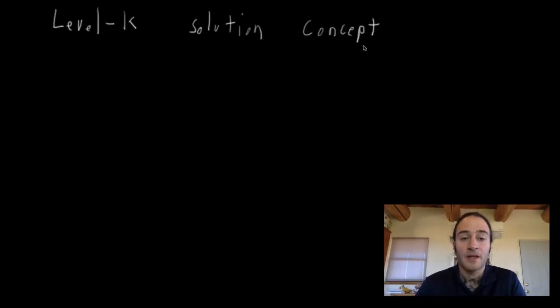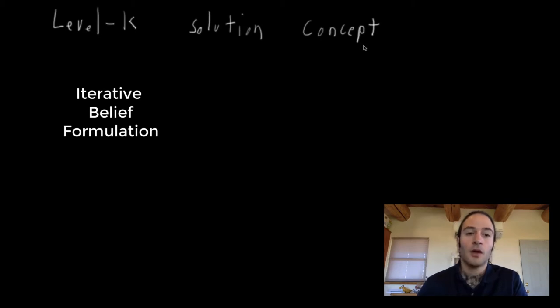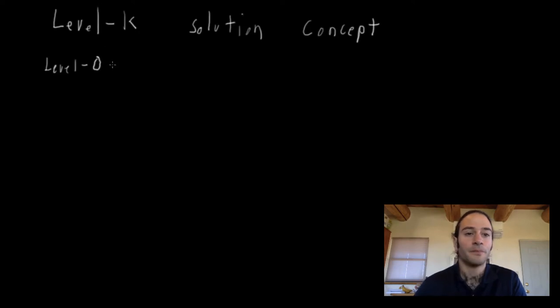The way that this works is that players do something called iterative belief formulation. So to do this, first we define a player that is level zero. So what does a level zero player do? It randomizes among all possible actions. So random actor. This player is considered non-strategic in that they're not forming beliefs, they're not optimizing anything, they're just some kind of random actor that chooses actions randomly.